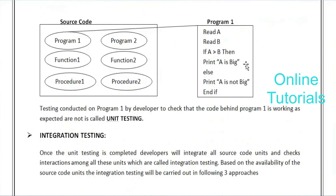In terms of understanding: program one could be the login page, and program two could be the compose email — each is a unit, a small portion. Exactly. And if you are going to test on the front-end application, that is called black box testing. If you are testing inside the code — behind the application there is a source code, and if you test that source code — that is called white box testing, which is done by developers. Front-end application testing is done by testers.